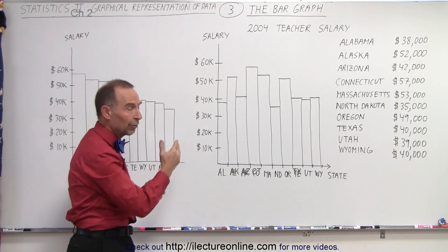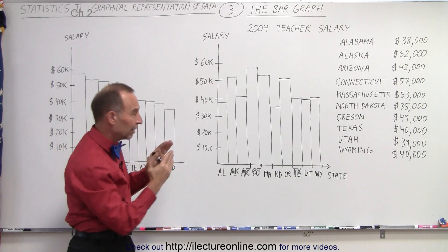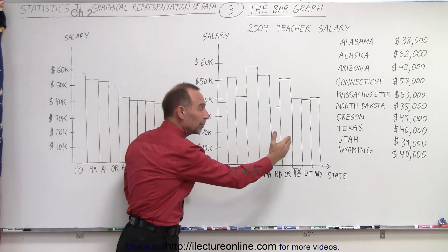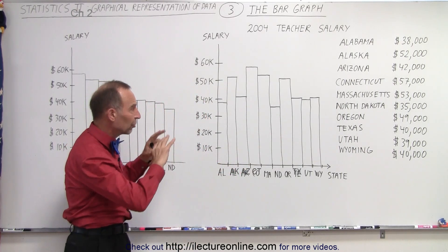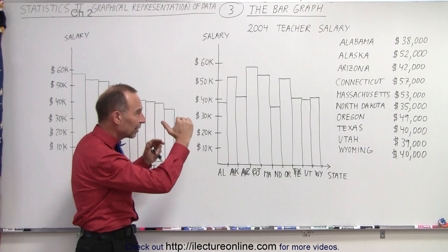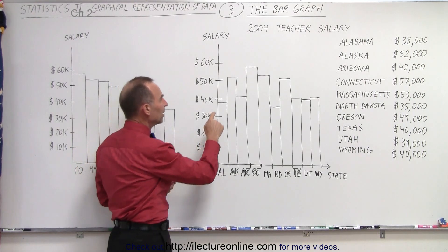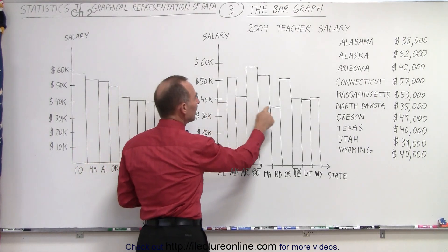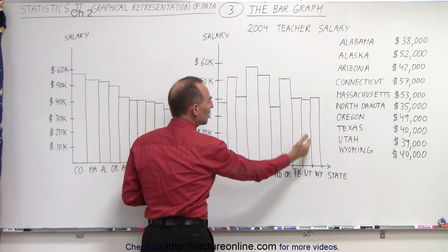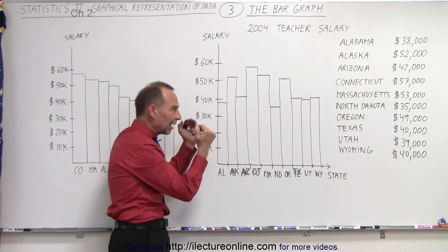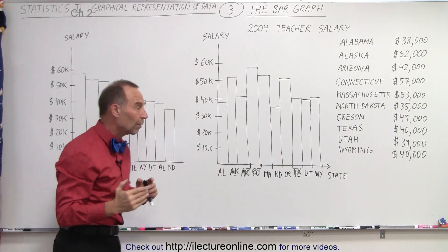So bar graphs, especially when the data is close and there's a lot of data points — 10 in this case — a bar graph seems to make more sense to give you that relative height. However, when you look at these here, it's very difficult to see which one is higher than the other because they're actually that close together.